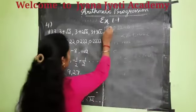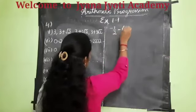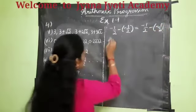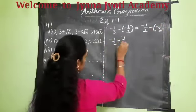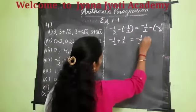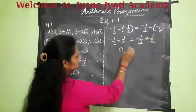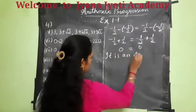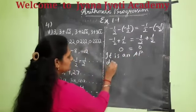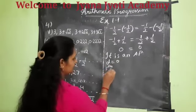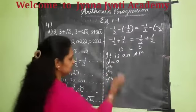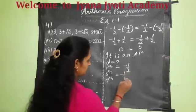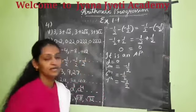Let us go for the eighth problem. Here minus 1 by 2 minus of minus 1 by 2 should be equal to minus 1 by 2 minus of minus 1 by 2. So minus 1 by 2 plus 1 by 2 equals 0 on both sides. LHS is equal to RHS, therefore we can say that it is an AP with common difference 0. So the fifth, sixth, and seventh terms will all remain the same: minus 1 by 2, minus 1 by 2, and minus 1 by 2.